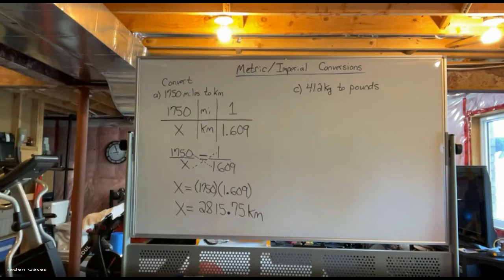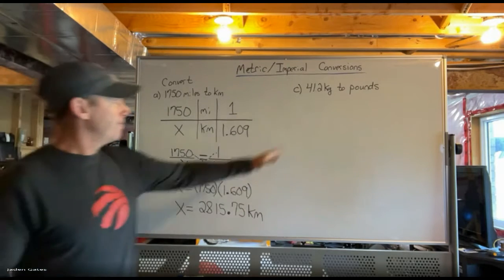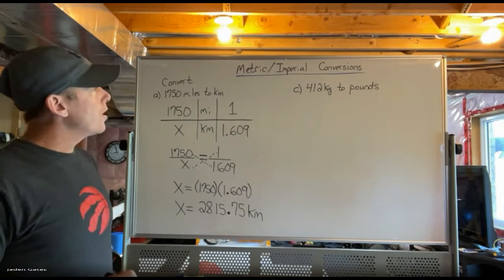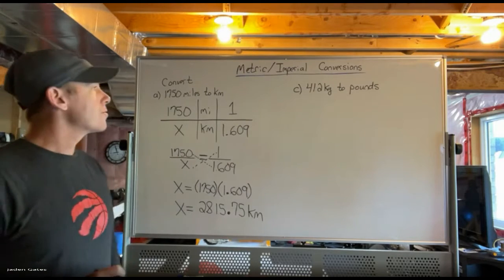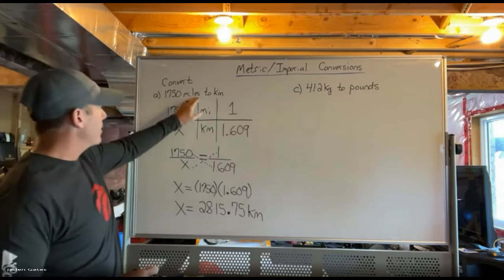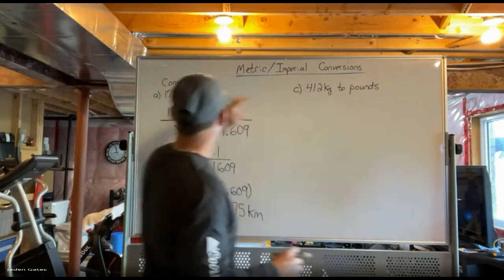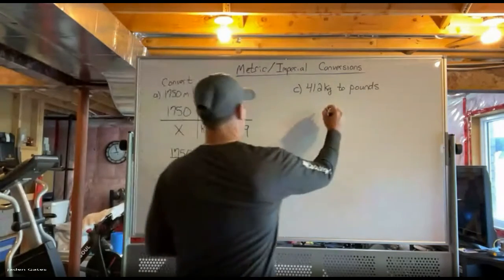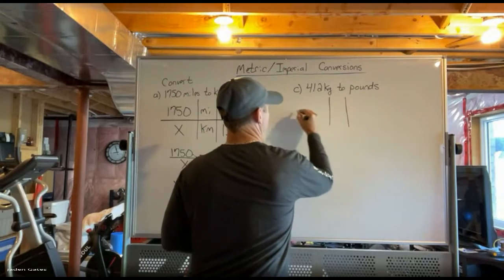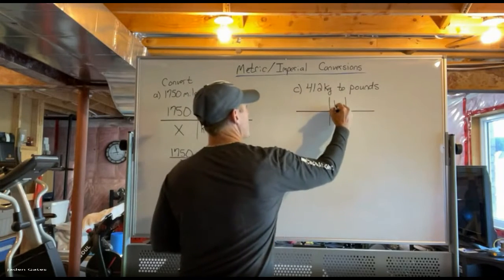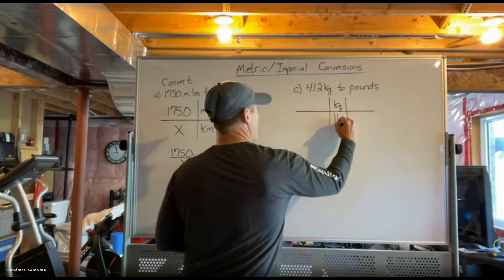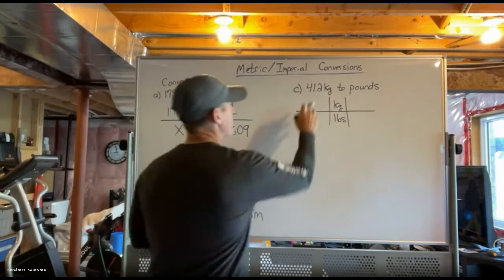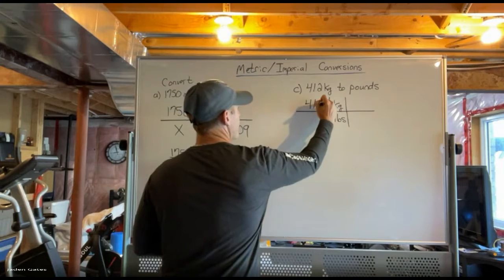Now let's try another one. I want to convert 41.2 kilograms to pounds. This time we're going from metric to imperial, whereas before we went imperial to metric, but again it's the same steps. I'm going to set up my table with kilograms and pounds as the units, and I write in 41.2 kilograms.